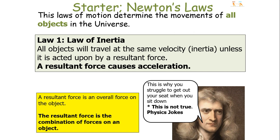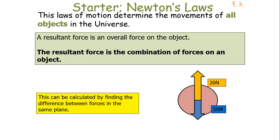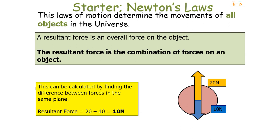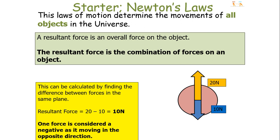A resultant force is an overall force on an object — you can consider it to be the combination of forces on that object. This can be calculated by finding the difference between forces in the same plane. In this particular example, we have 20 newtons acting upwards and 10 newtons acting downwards, so the overall resultant force is 10 newtons.